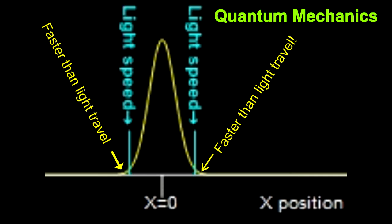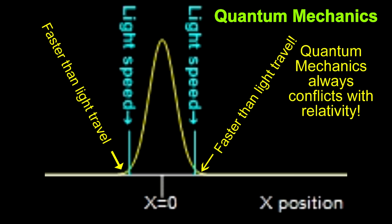The upshot is that particles always have a non-zero probability of being found anywhere in the universe, and Einstein's theory of relativity is always violated. Quantum mechanics always conflicts with relativity.